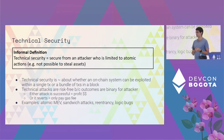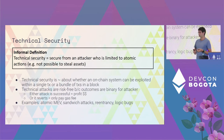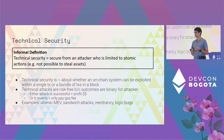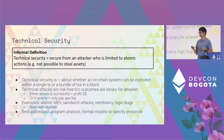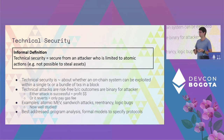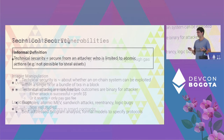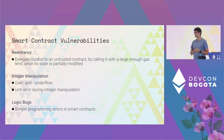Examples of technical attacks include atomic MEV, sandwich attacks, reentrancy, and attacks that exploit logical bugs. These are now fairly well studied — we know more or less how to protect against them through testing smart contracts, program analysis, and formal methods. These are generally the better-studied class of attacks.